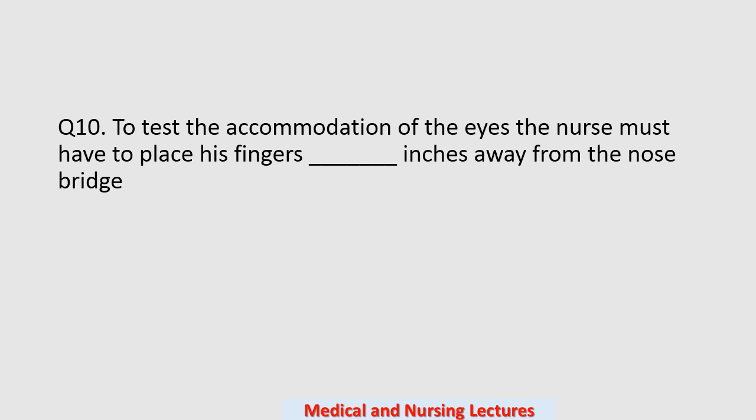Question number ten: to test the accommodation of the eyes, the nurse must place his fingers how many inches away from the nose bridge? Options are 6 inches, 12 inches, 18 inches, or 20 inches. The correct option is 6 inches.